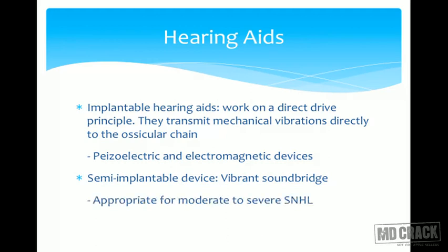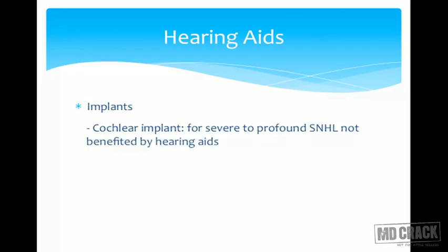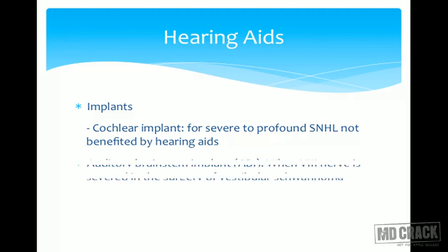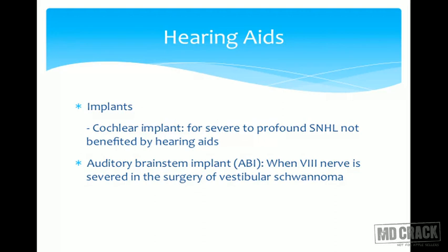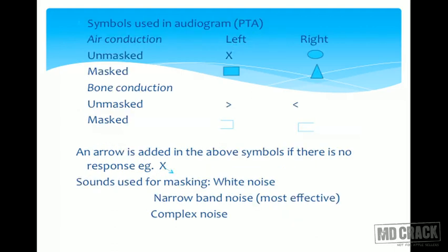The cochlear implant is for severe to profound sensorineural hearing loss not benefited by a hearing aid. The auditory brainstem implant (ABI) is used when the eighth nerve is severed during surgery for vestibular schwannoma. The ABI is placed in the lateral recess of the fourth ventricle — this is an important MCQ point.